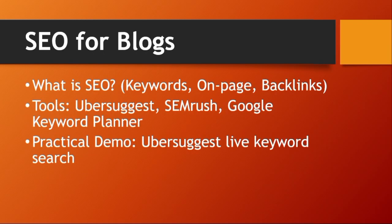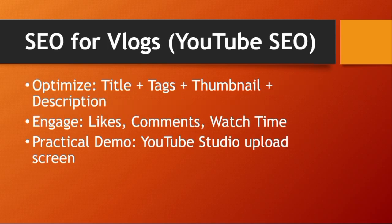Now, SEO for blogs — search engine optimization — is still valid but is gradually fading as AI optimization takes over. However, SEO is very useful when you use tools like Ubersuggest, SEMrush, and Google Keyword Planner. For YouTube SEO, optimize your title, tags, thumbnail, and description. The immediate likes, content quality, and watch time you get will determine how YouTube promotes your video.